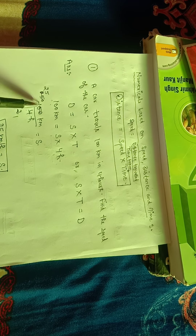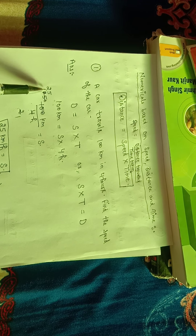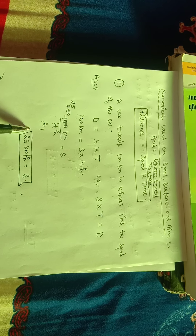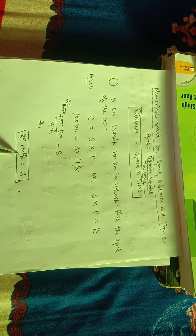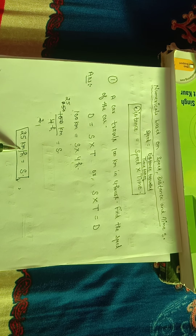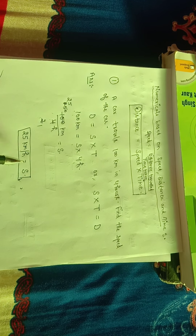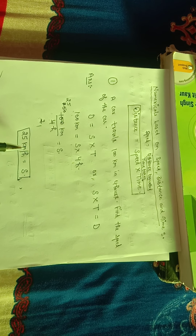Calculating: 100 divided by 4 equals 25. So, speed equals 25 kilometers per hour. The speed of the car is 25 kilometers per hour.